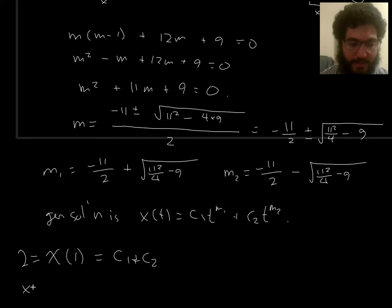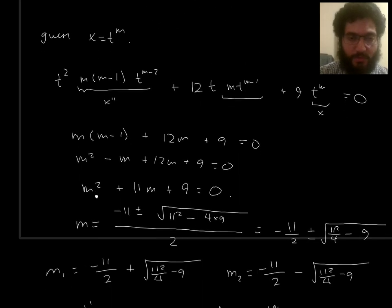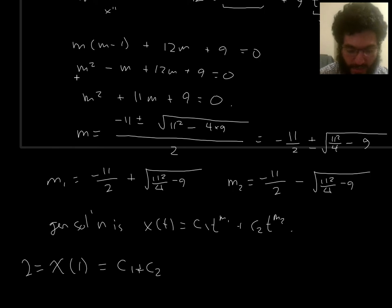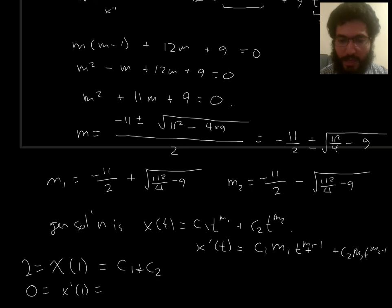And then for x prime of t, what was that one? x prime of 1 is 0. So I'm supposed to get 0 equals x prime of 1 equals, okay, but I can't, there's no way I can just compute x prime of 1 without making mistakes. I should compute x prime of t first. So that's c1 m1, t to the m1 minus 1, plus c2 m2, t to the m2 minus 1. And now I plug in 1 and I get c1 m1 plus c2 m2.